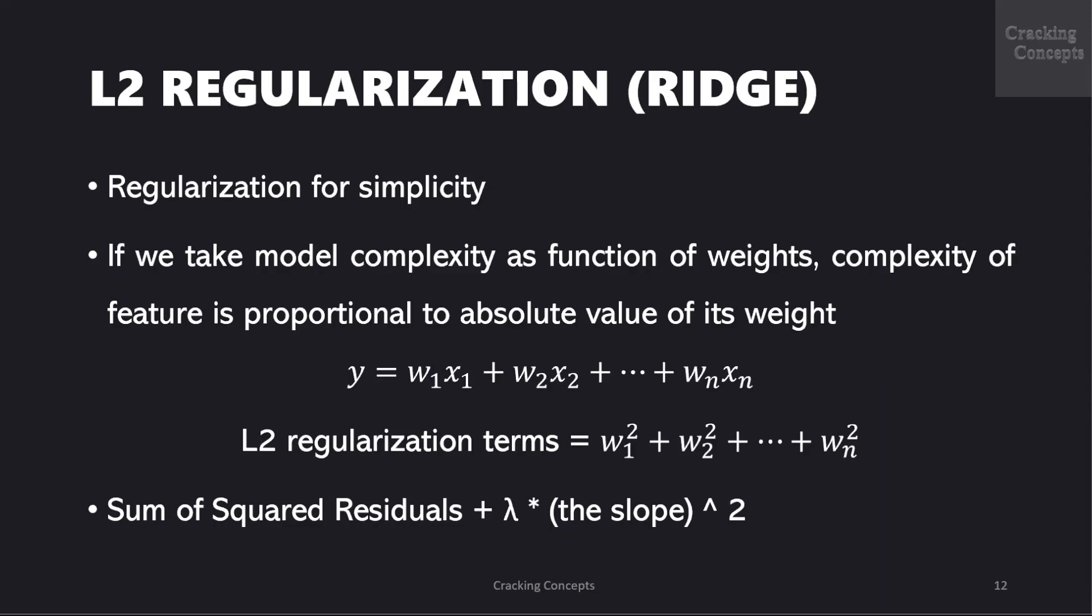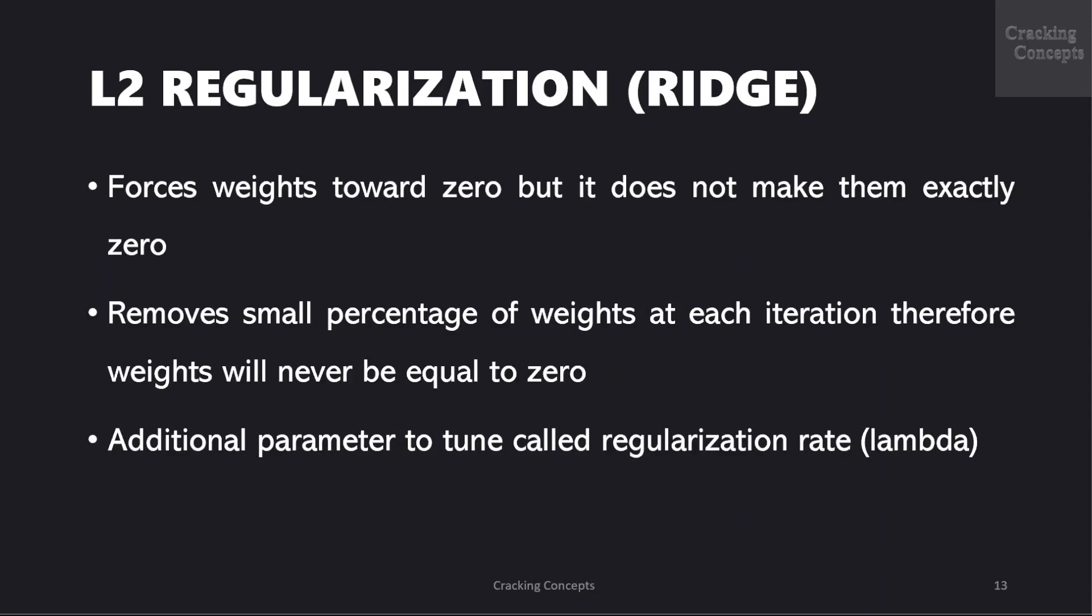Now the ridge regression is given by sum of squared residuals plus lambda into the square of slopes. Now L2 regularization forces the weights towards zero but it does not make them exactly zero. It acts like a force that removes a small percentage of weights at each iteration without making it zero.